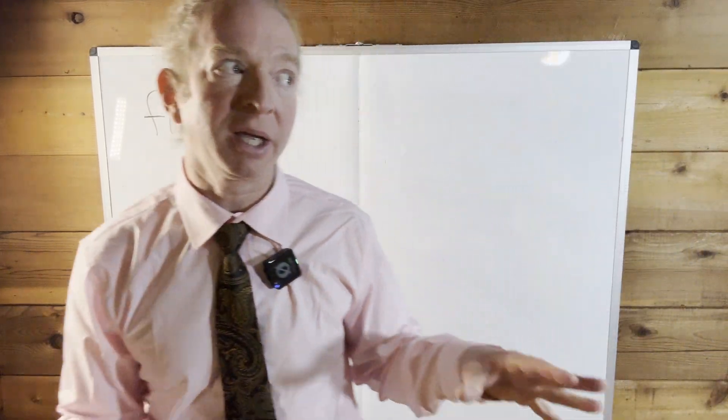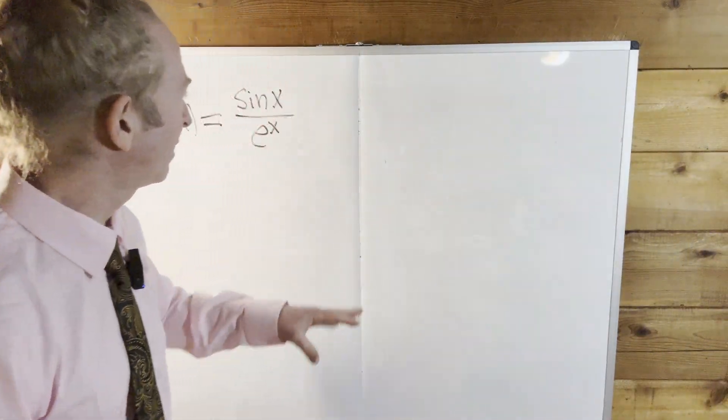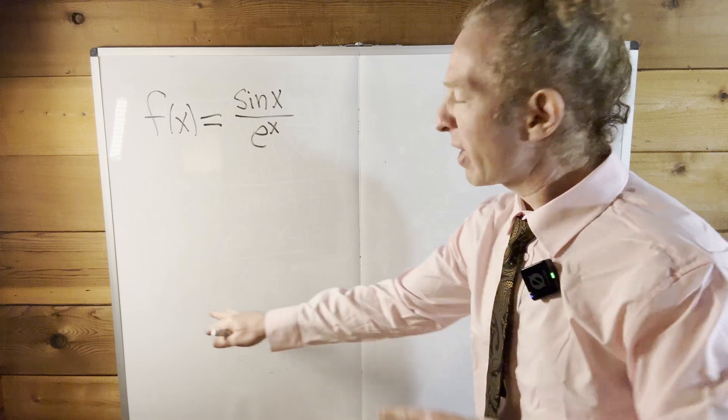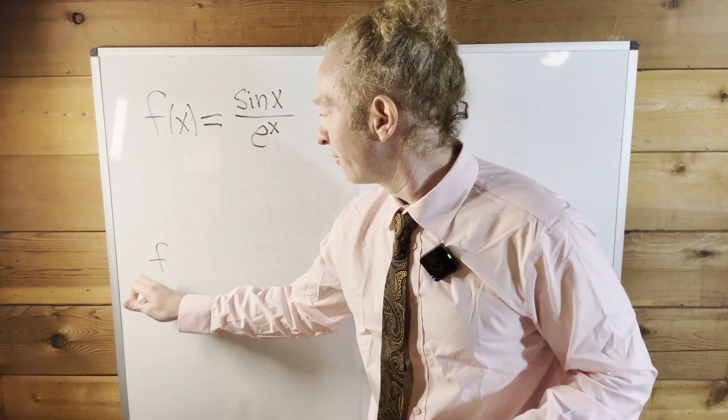So I'm going to start this problem by writing down the quotient rule. Let's write it down here. So it's f over g.